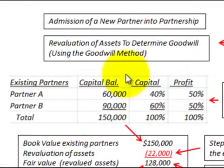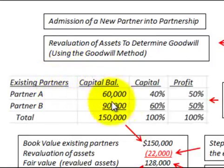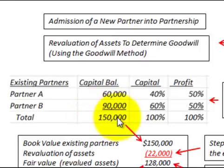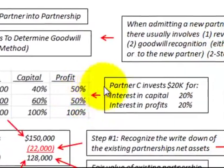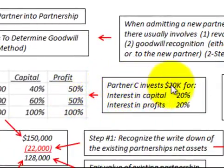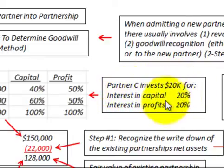Let's look at our example. We have existing partners, Partner A and Partner B, and they have a total capital balance of $150,000. Their profit-loss ratio is split 50-50 — Partner A gets 50% and Partner B gets 50%. Now we have new Partner C, and they're going to invest $20,000 for a capital interest of 20% and a profit interest of 20%.